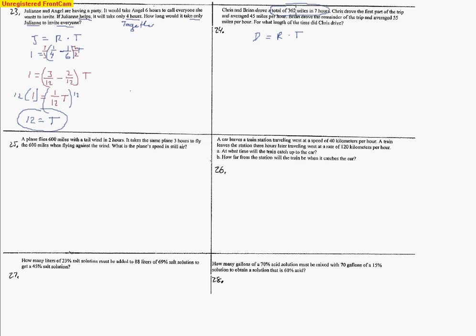It says Chris drove the first part of the trip and averaged 45 miles an hour, so we know it's 45. Brian drove the second part, the remainder of the trip, and averaged 55 miles an hour. For what length of time did Chris drive? That's the question. We want to know the length of time Chris drove, so let's put our variable t in place of Chris's time. Let's do the same thing with distance, so d for distance.